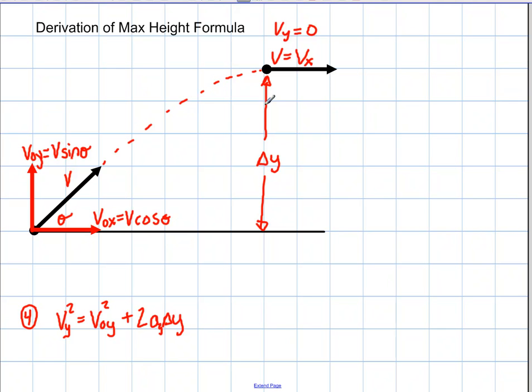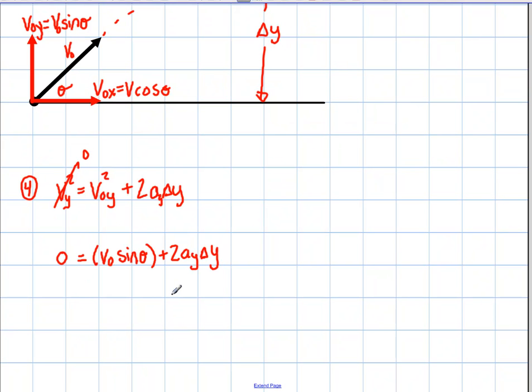So we know that in this case, the final y velocity is zero. And we know that the V initial y is simply V initial sine theta. So if I just go ahead and substitute some of these numbers, I have zero equals V initial sine theta squared plus two A y delta y. In other words, acceleration in the y times delta y. And I want to solve for delta y. That's going to be my max height.